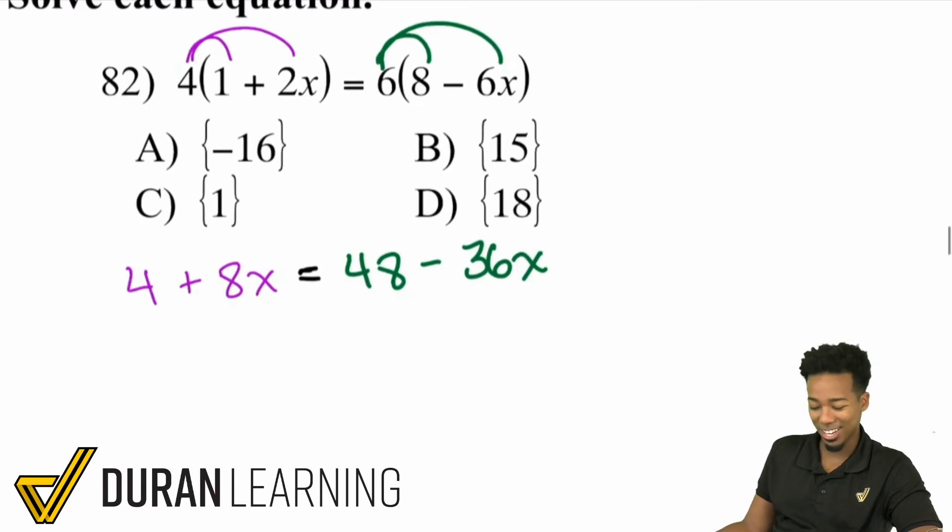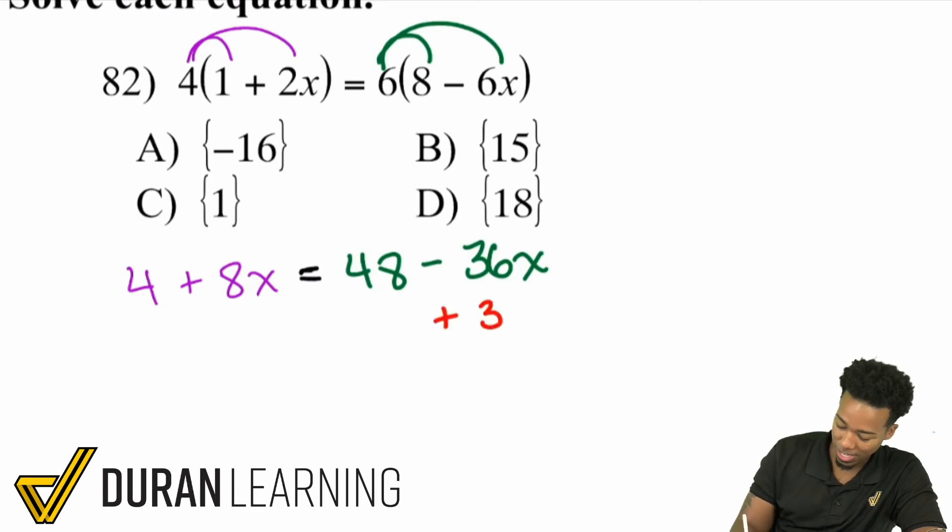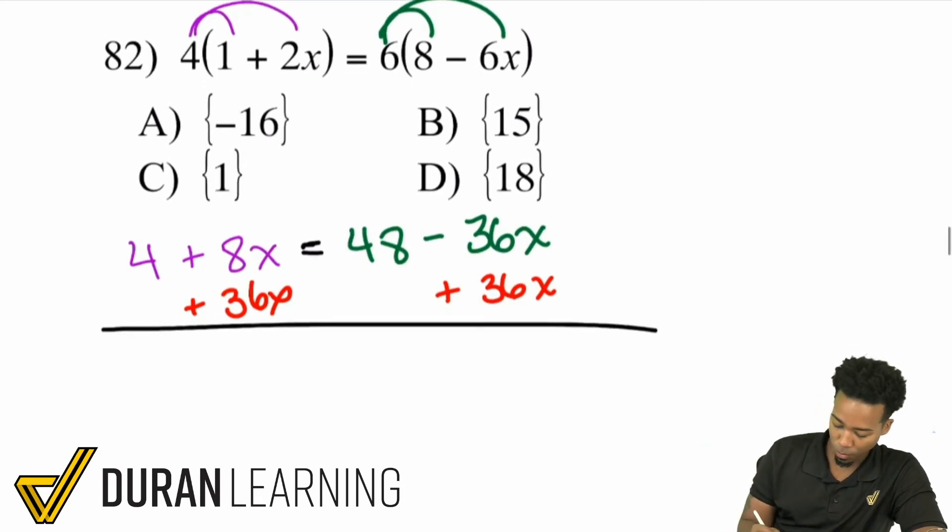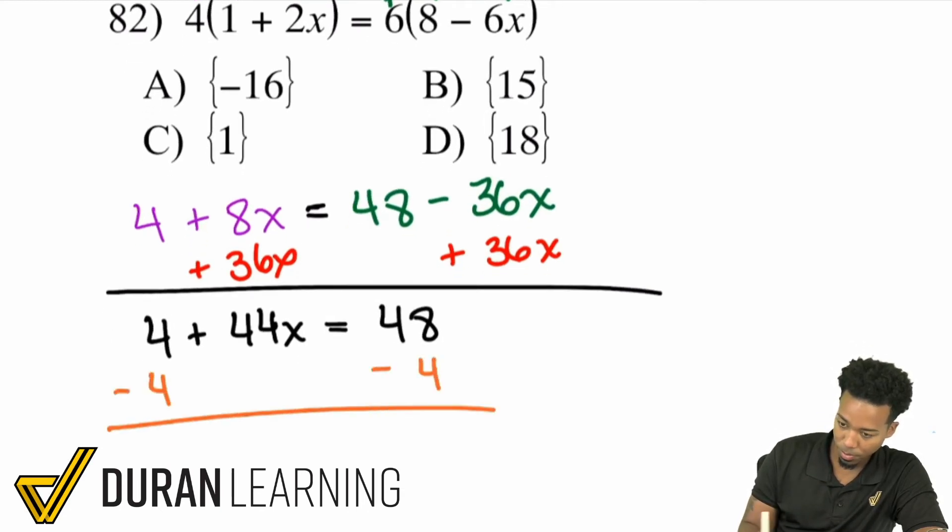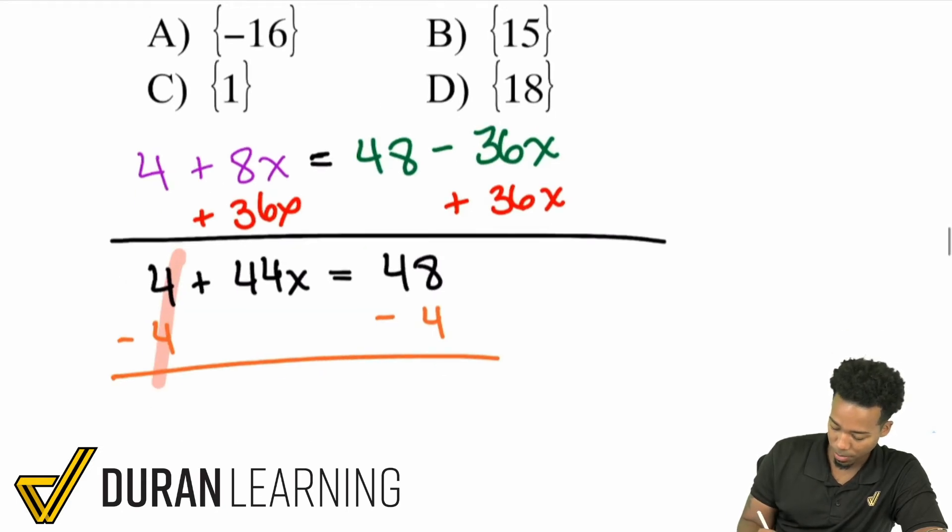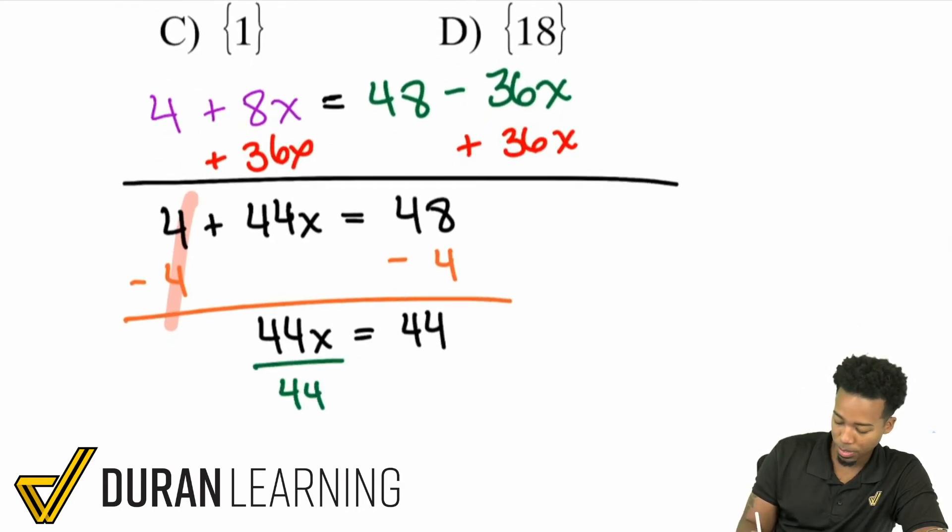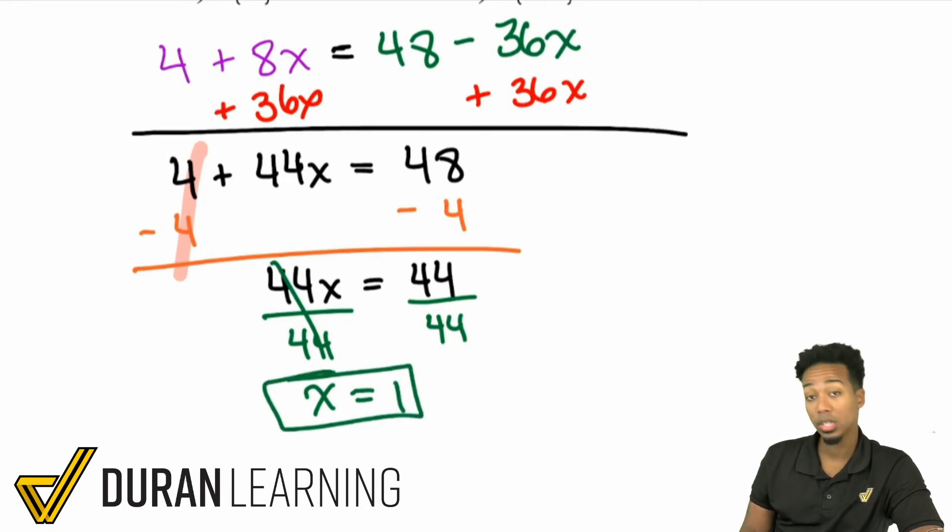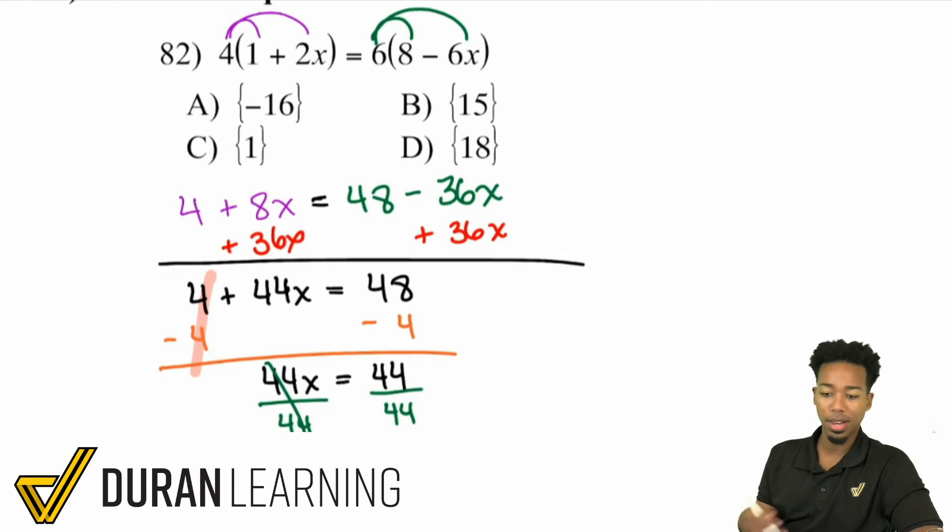We've seen this before. You know how to solve this. Let's get to work. I'm going to add 36x to both sides. And you can add the 36x and subtract the 4 on both sides at the same time, but I'm just showing you one step at a time. From here, we'll have 4 plus 44x equals 48. Now we'll subtract 4 from both sides. Once we do that, giving us 44x equals 44. Our last step, divide both sides by 44. X equals 44 divided by itself, which is 1.